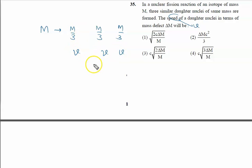Kinetic energy will be also same. So kinetic energy of each body will be given by half M V square, so half M by three into V square.